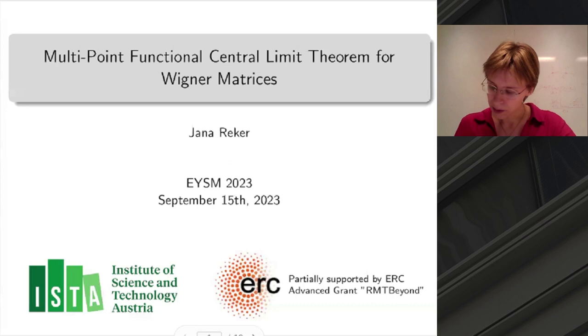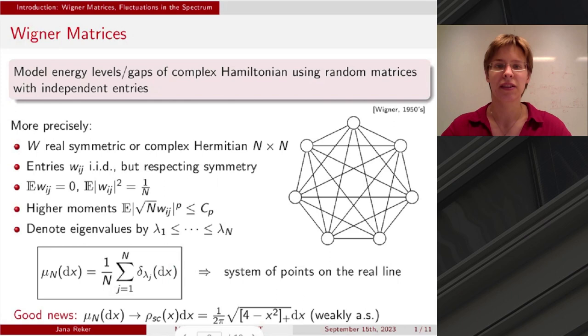So without further ado, let's introduce the main actors to the stage, which are the Wigner matrices that are also in the title. And this is a random matrix model that goes back to Eugene Wigner in the 1950s, who introduced it as a model for the energy levels or energy gaps of the complex Hamiltonian. And what we're looking at here, mathematically, is the real symmetric or complex Hermitian N by N random matrix with entries that are in a sense as IID as possible, while still respecting the symmetry that we prescribe.